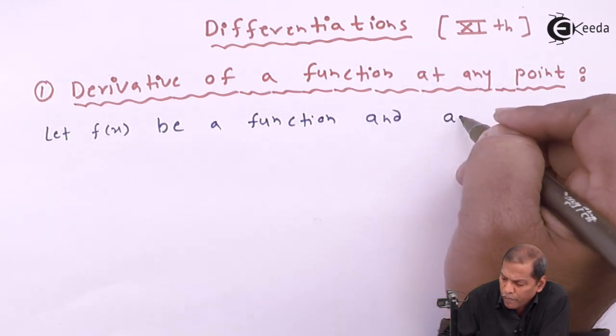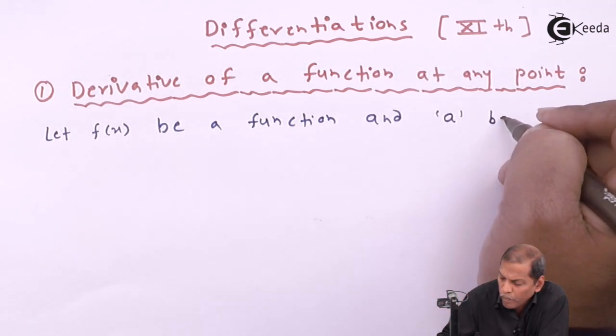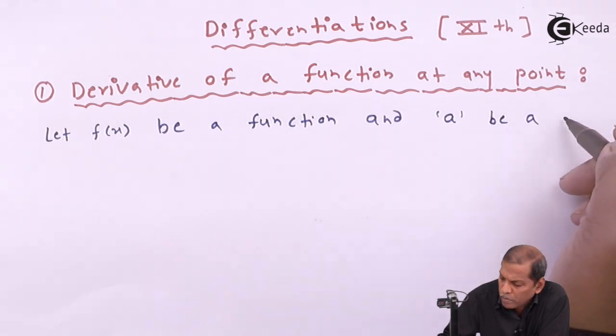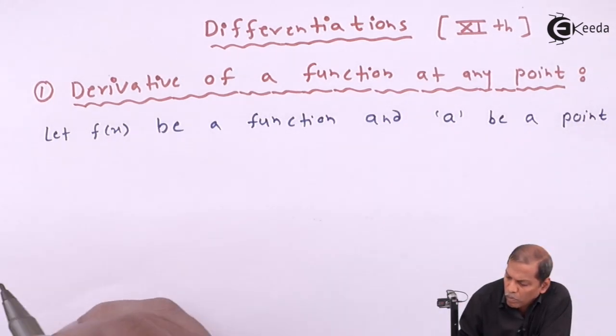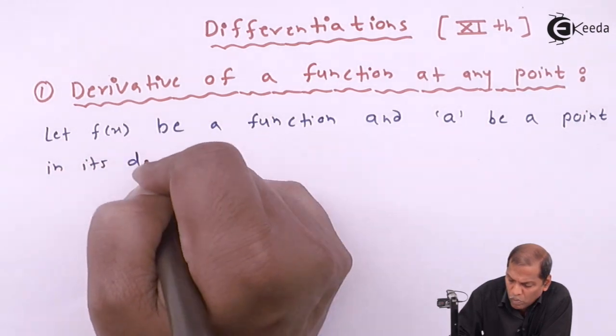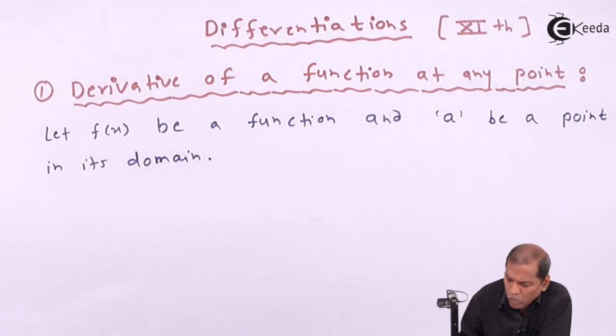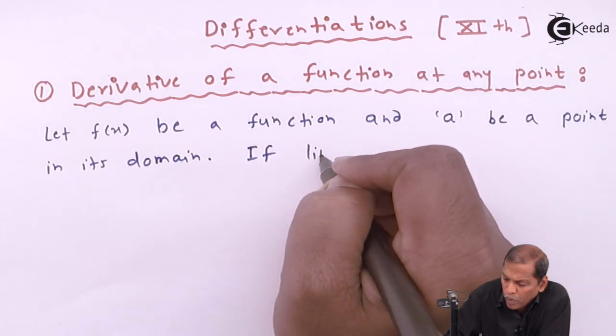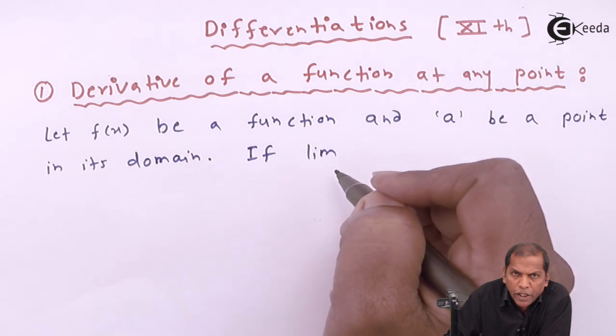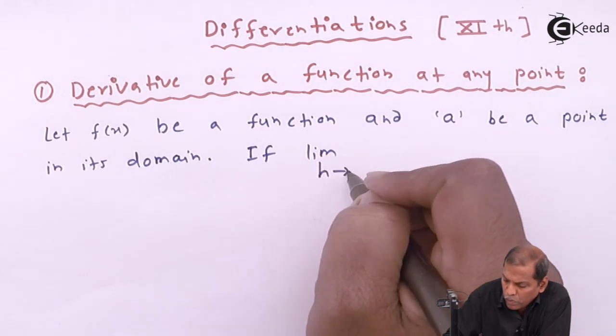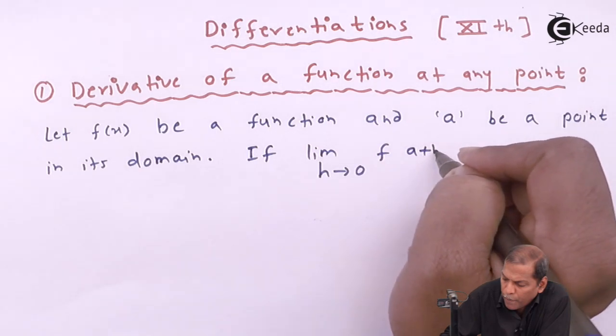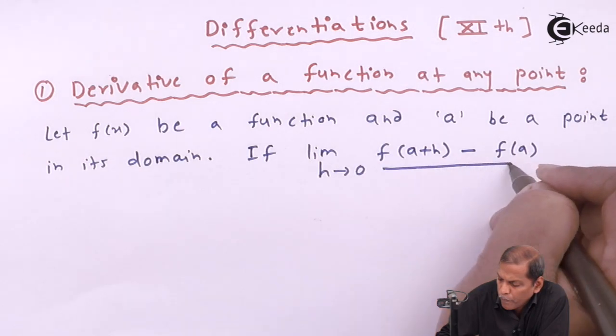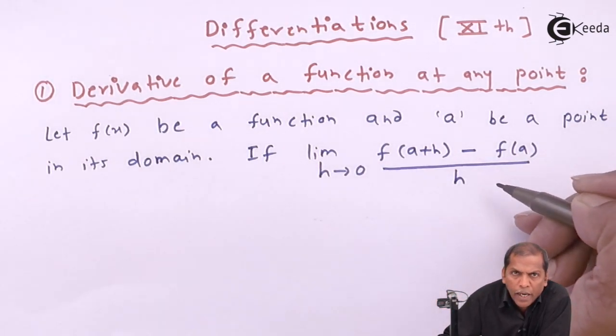and small 'a' be a point in its domain. If limit h tends to 0 of [f(a+h) - f(a)]/h